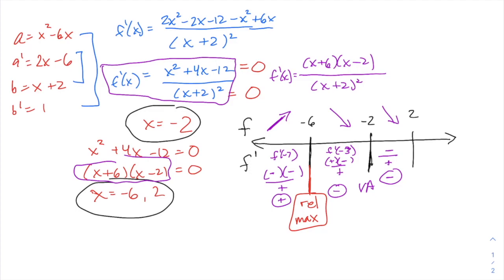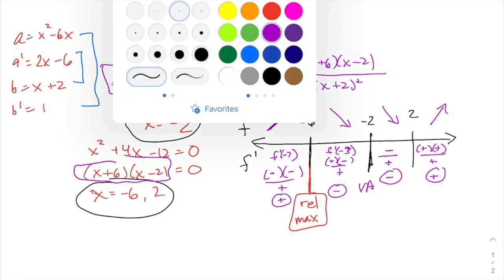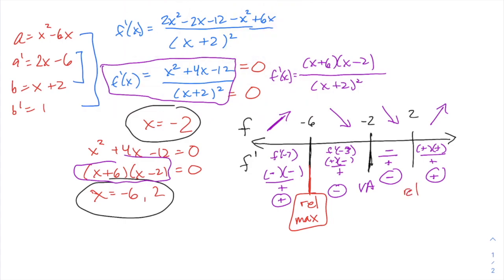On the other side of two, if you plug in three, for example, three, you're going to get positive times positive, divided by positive, which is all a big positive. So we actually have a relative minimum at two because f prime is changing from negative to positive, indicating f is changing from decreasing to increasing.